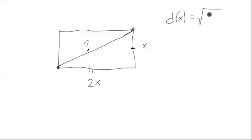So it would be the square root of x squared plus quantity 2x squared. Because we know that this squared plus that squared is going to be equal to what we're looking for, squared. So we have a function where d of x is the output and it depends on x.